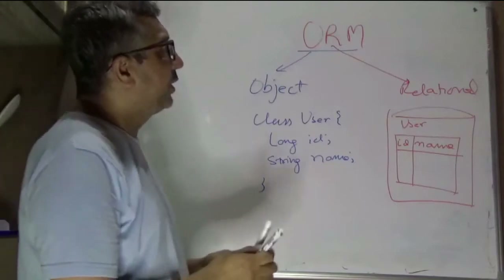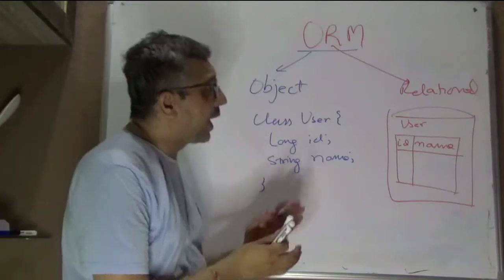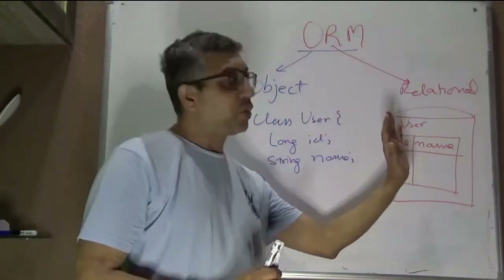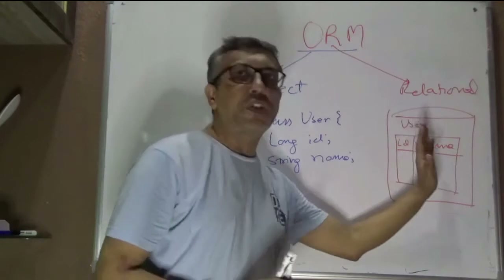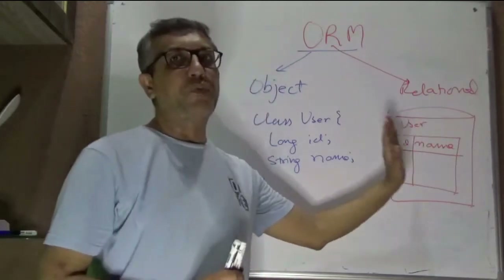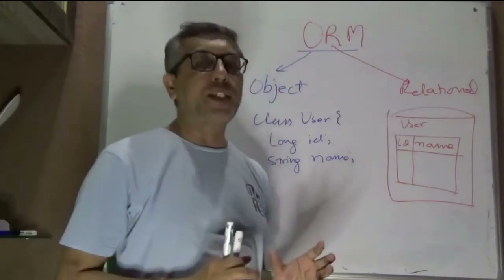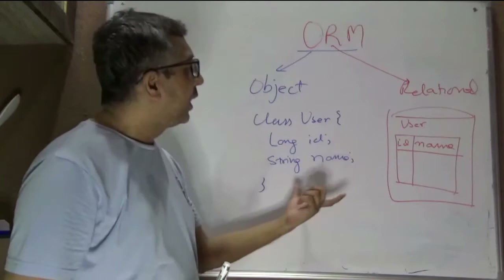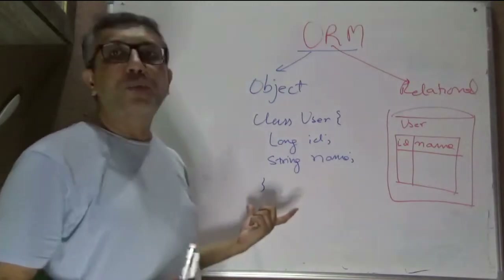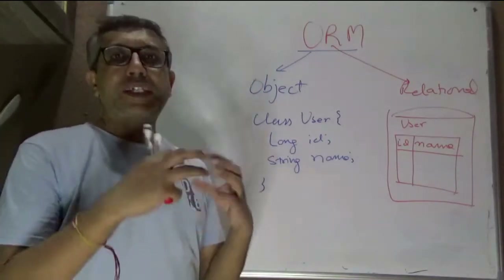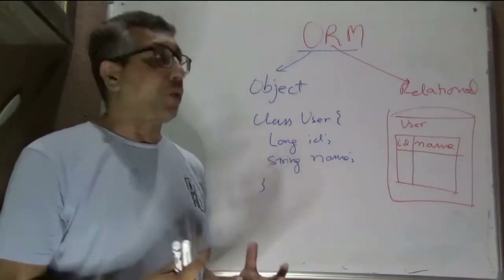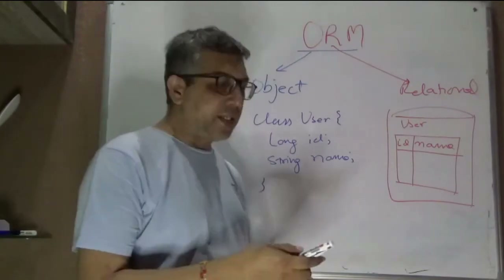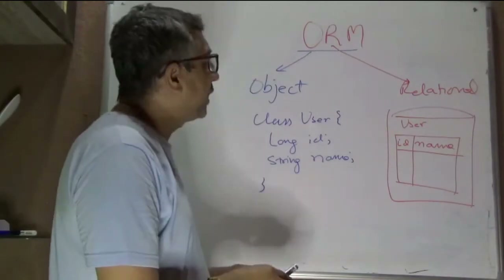On the relational side of the world, you have a way of capturing data in the form of rows and columns. Whereas on the object side of the world, it is in the form of objects. And that is where ORMs come into picture.